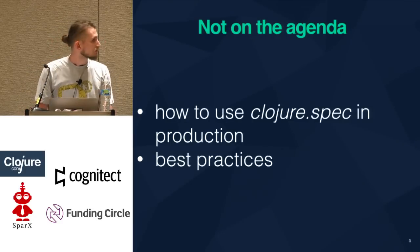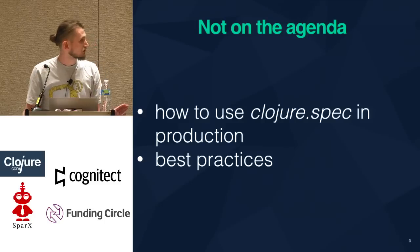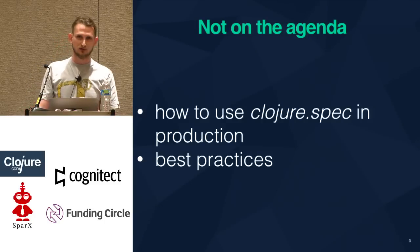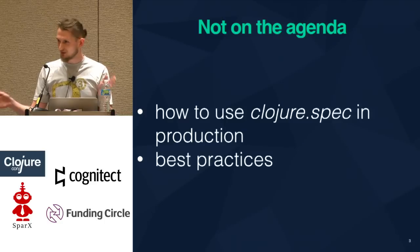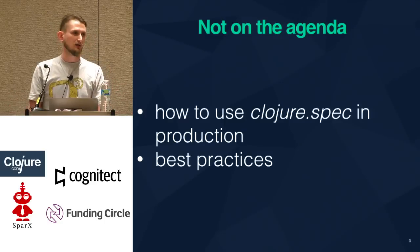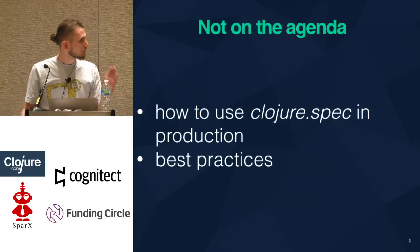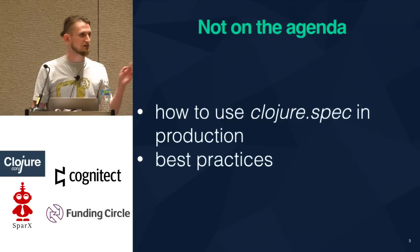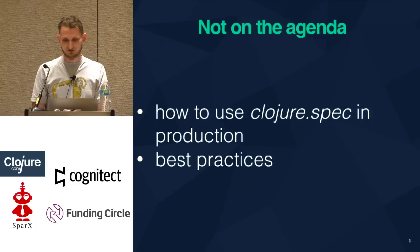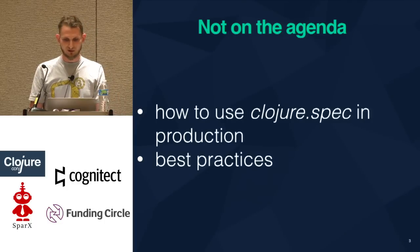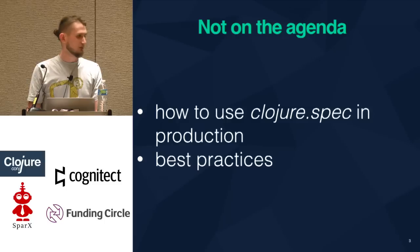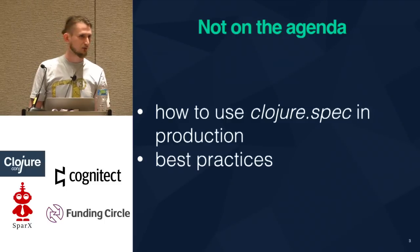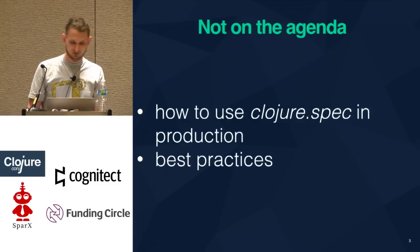So what's not on the agenda? How to use Clojure spec in production — I know some of you are already doing this, even though it's alpha. I'm probably not going to show you too many best practices. There's going to be code examples, but I think this is more of a musical talk, and there are already great resources elsewhere and great talks.